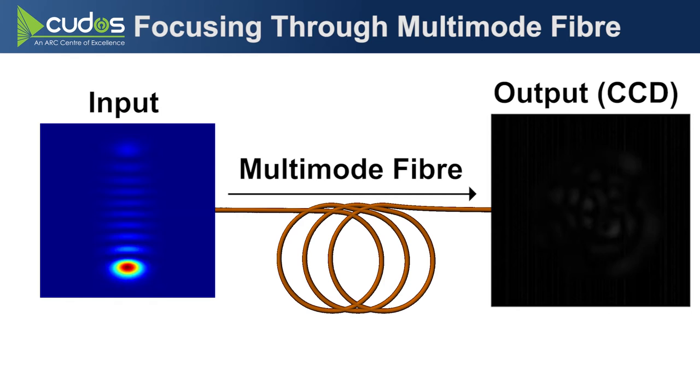As you probably know, a multimode fiber doesn't preserve an image as it propagates through it.